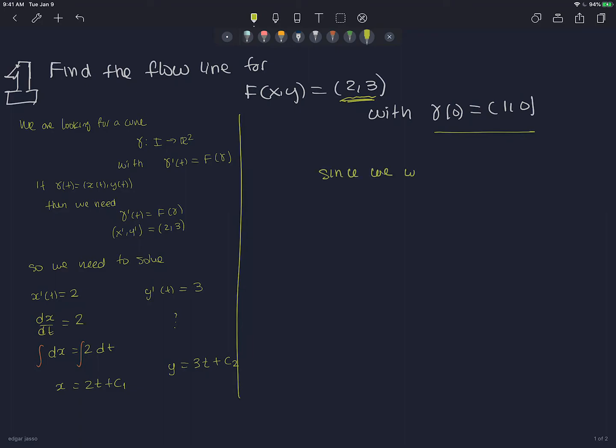Because gamma(0), we want it to be (1,0). So finally, since we want gamma(0) to be (1,0), then we're thinking that x(0) = c₁. So c₁ must be 1. And y(0), so when I'm plugging it in here, 0 + c₂, so that should be 0. So my gamma(t) that I was looking for is (2t + 1, 3t).